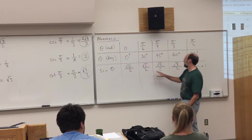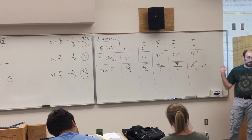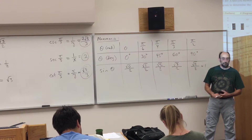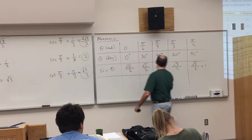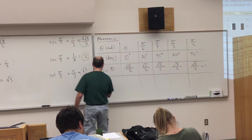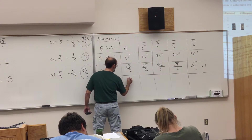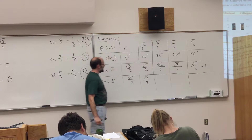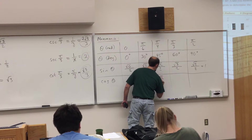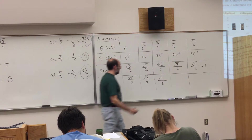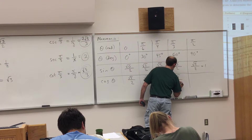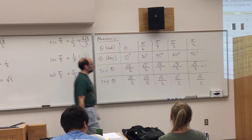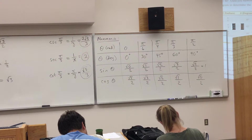The cosine reads the same values in reverse: root 4 over 2 for cosine of 0, root 3 over 2 for cosine of pi/6, root 2 over 2 for cosine of pi/4, root 1 over 2 for cosine of pi/3, root 0 over 2 for cosine of pi/2. That's a nice trick to help you remember.